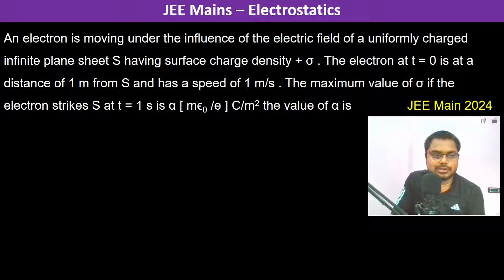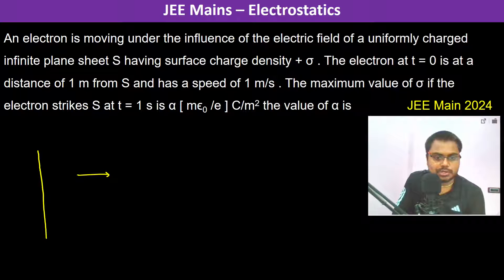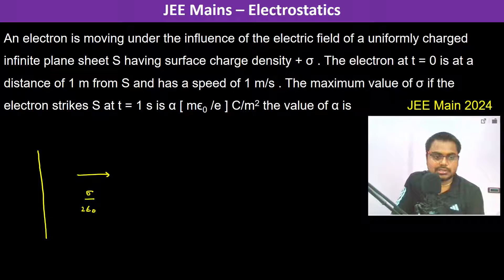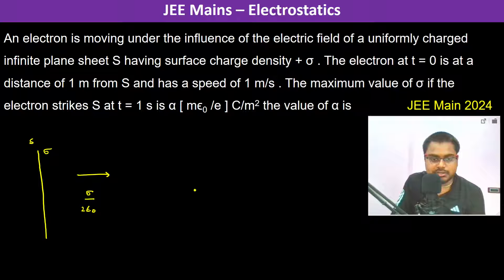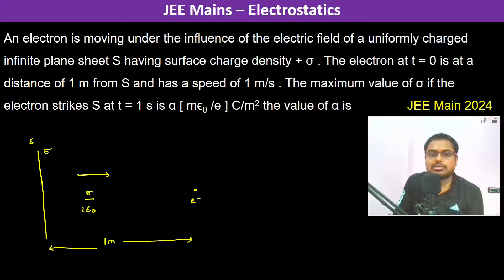An electron is moving under the influence of the electric field of a uniformly charged infinite plane sheet. The infinite plane sheet produces an electric field of σ/(2ε₀). It is a uniformly charged infinite plane sheet S with surface charge density σ. At one meter distance, there is an electron which has a speed of one meter per second.